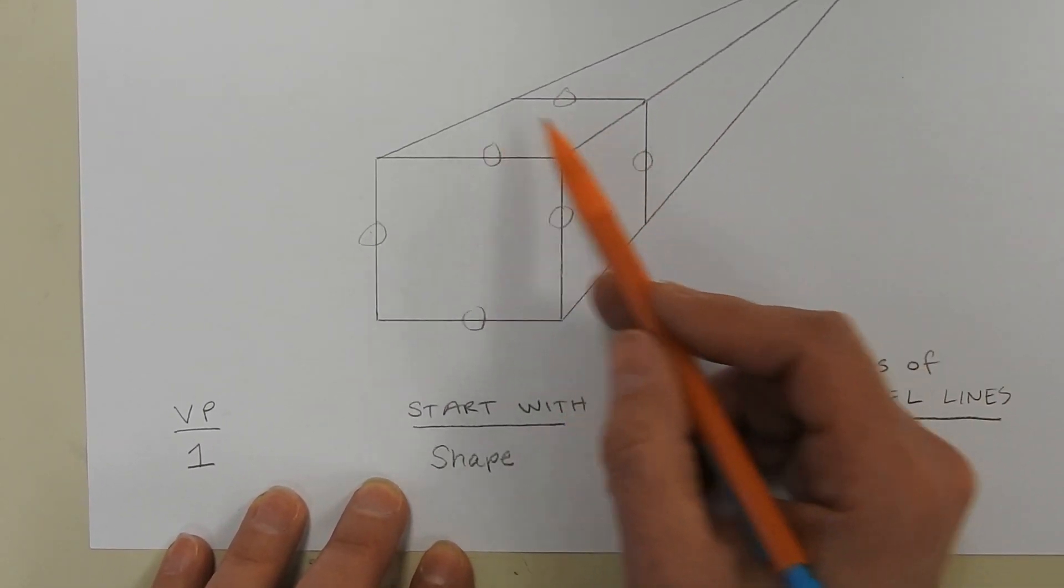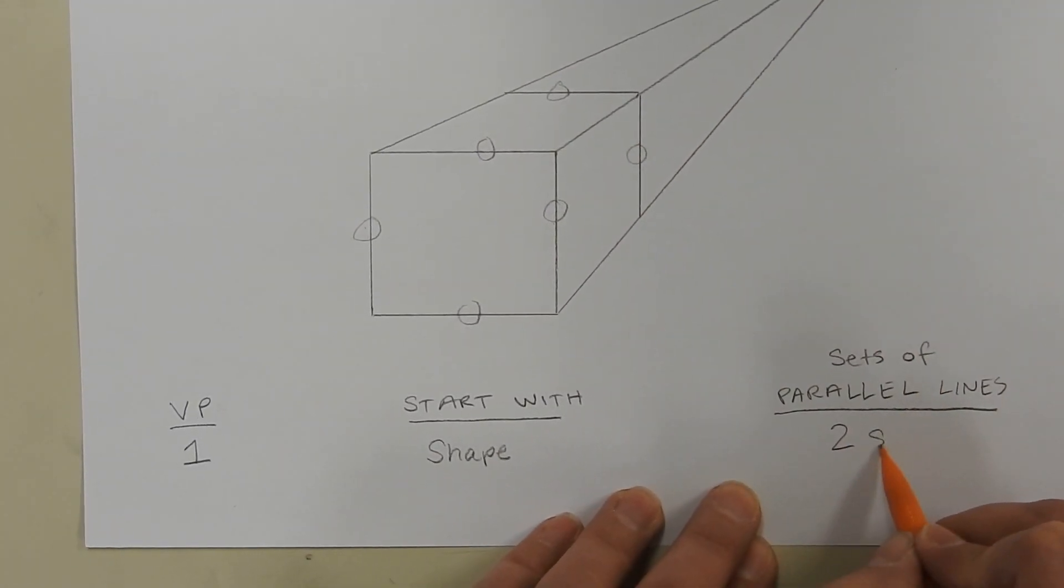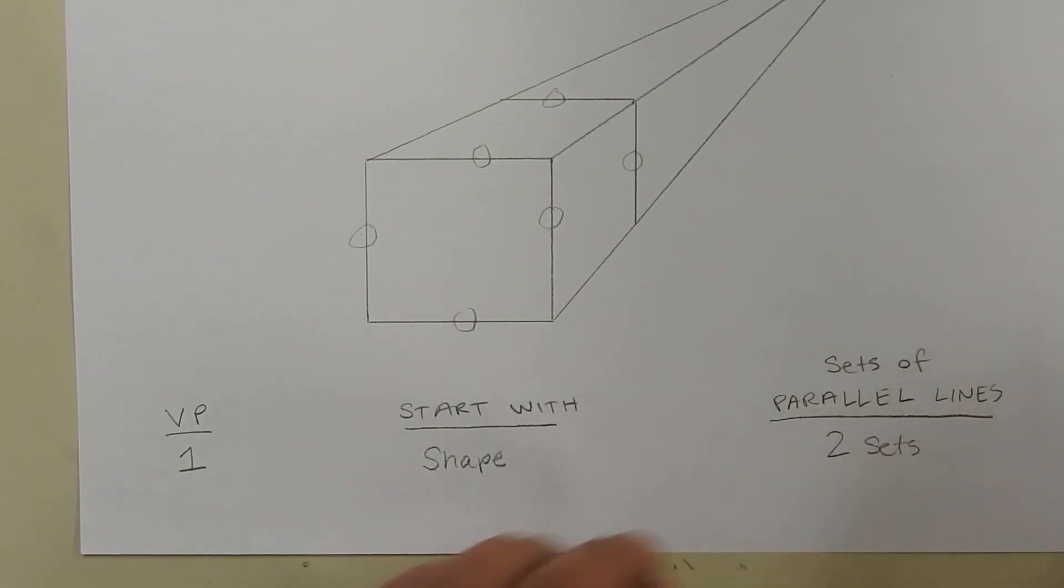And our other set here converge. So we have two sets of parallel lines.